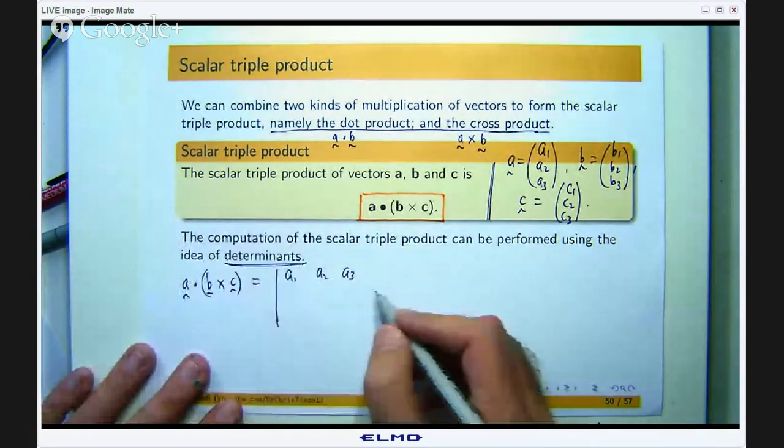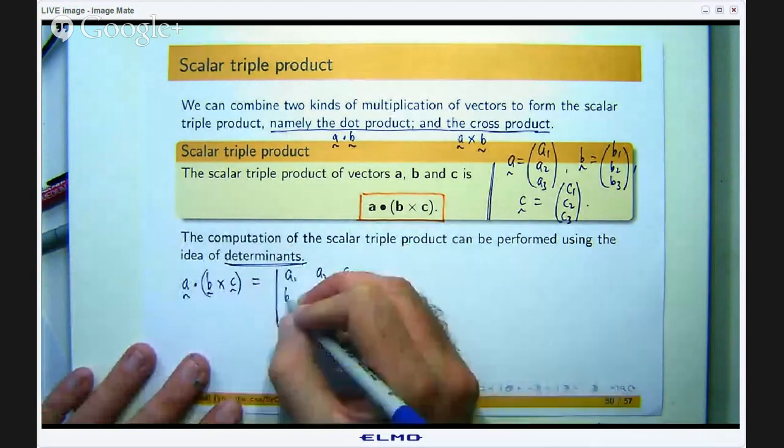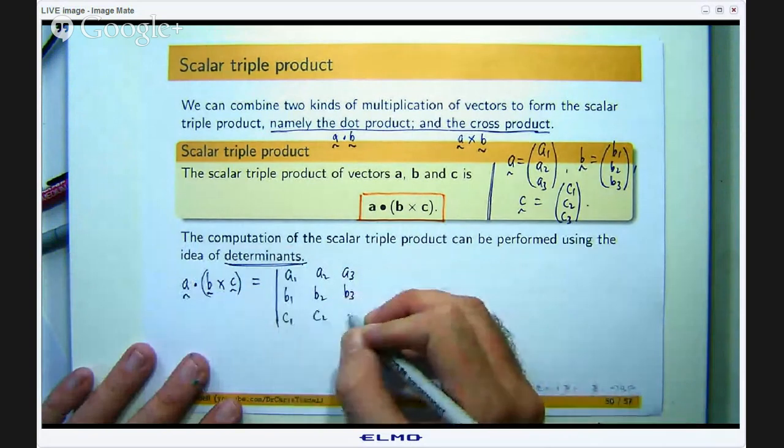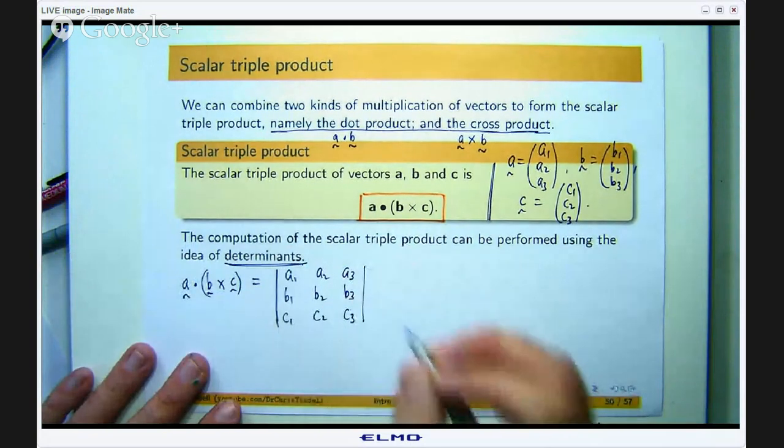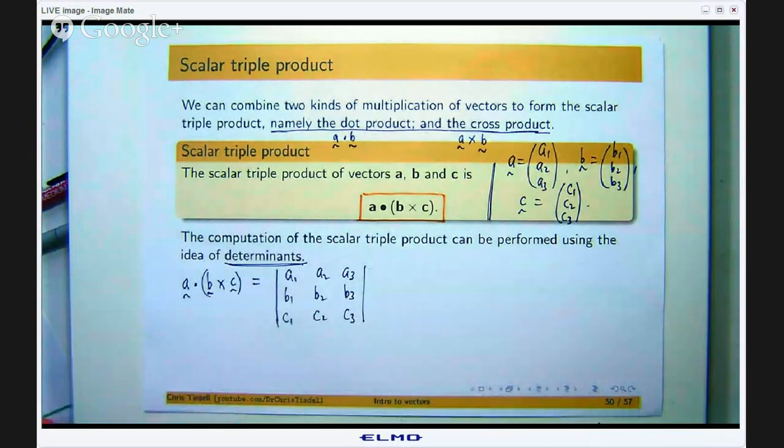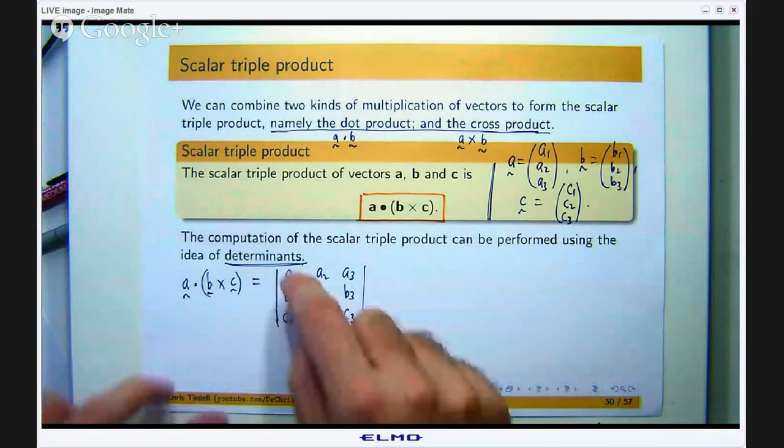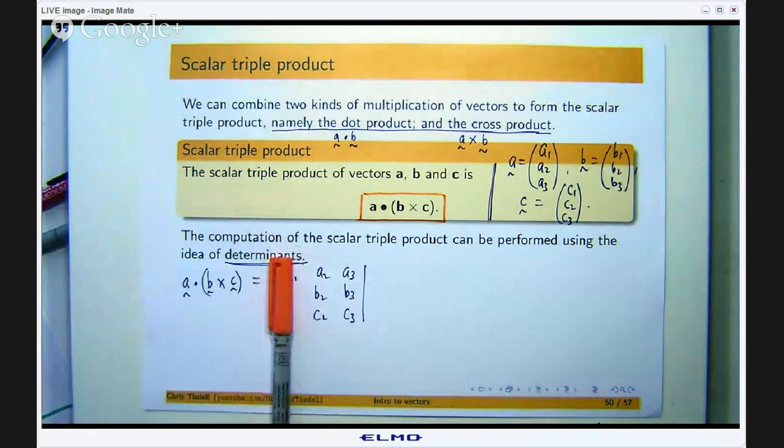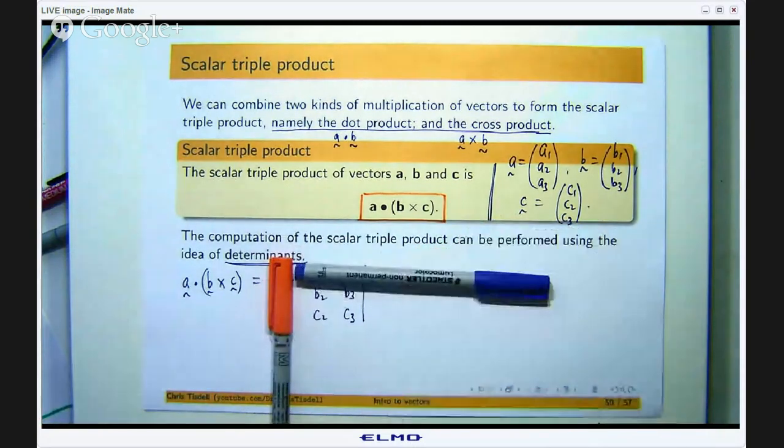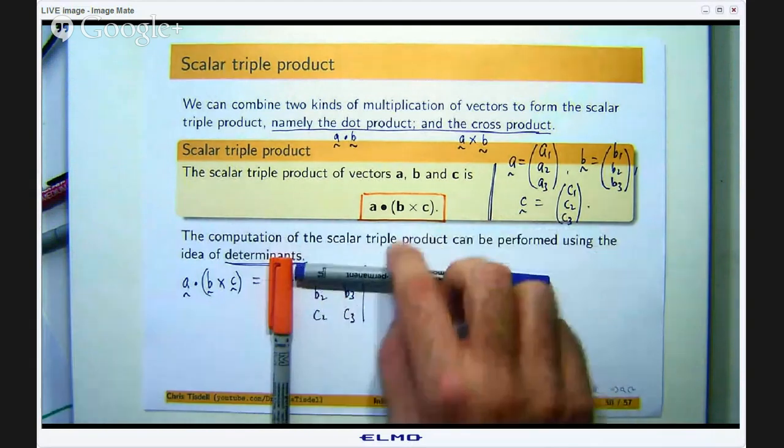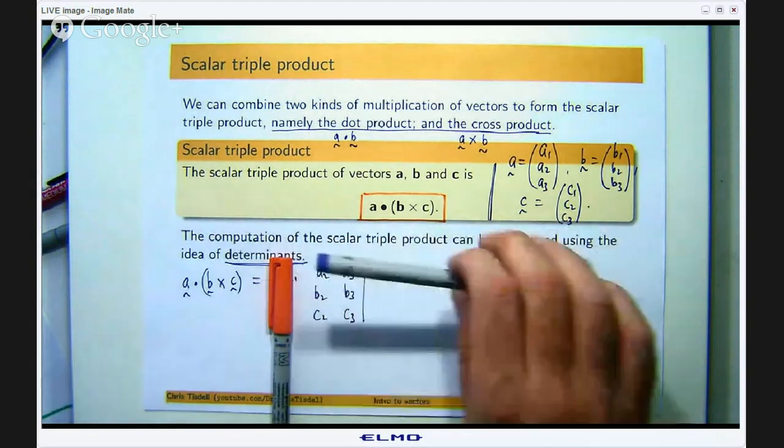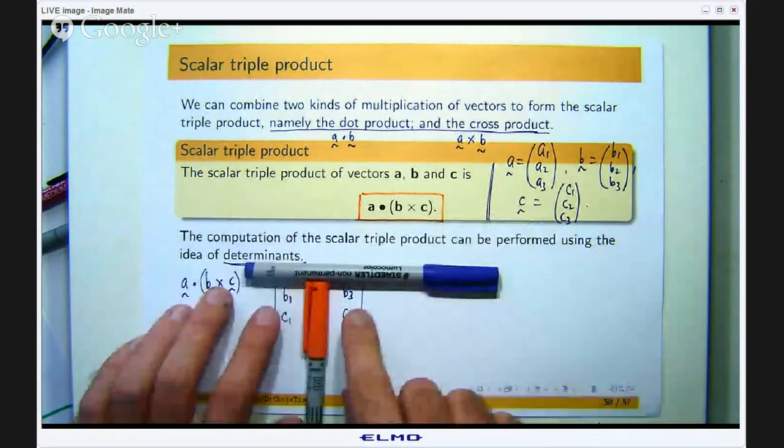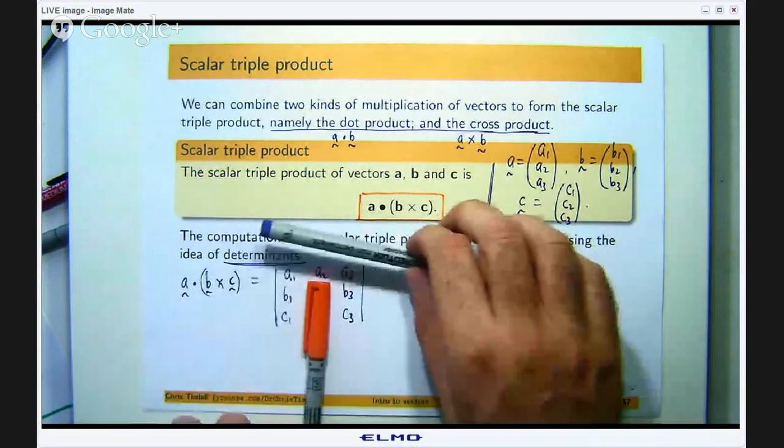It is a lot like when we formed an algorithm to compute the cross product of two vectors but just with a little twist. Instead of writing the unit vectors at the top you write the components of the vector a. Okay, and the components of vector b as a row and the components of c as the third row. Okay, so we know how to compute this. I like to call it a little game of cover up. You work your way along the top row. You start at a1, you look at the column and the row that a1 is in and you cover them up and you see what is left and you multiply a1 by the determinant of this. Then you move on to the a2, you play cover up with the row and the column that a2 is in and you multiply a2 by what is left. Then you move on to a3 and you do the same.